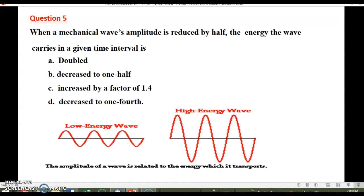Question 5. When a mechanical wave's amplitude is reduced by half the energy the wave carries in a given time interval is: doubled, decreased to one-half, increased by a factor of 1.4, or decreased to one-fourth.